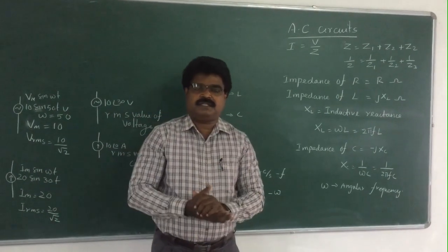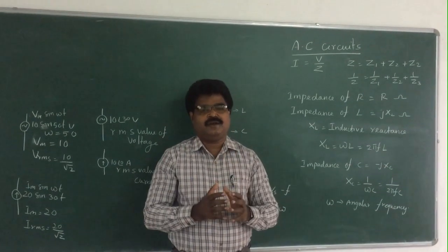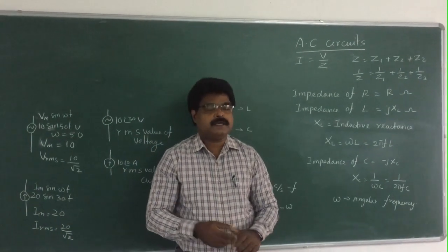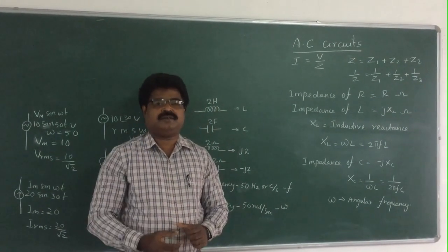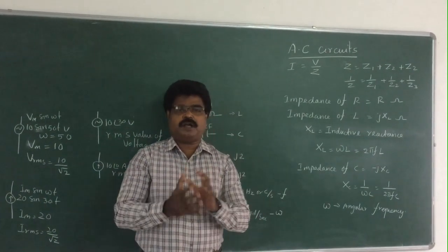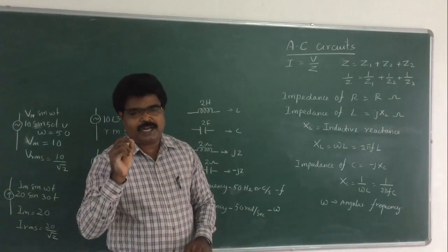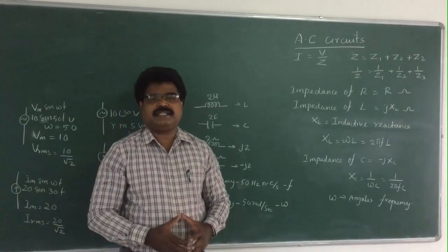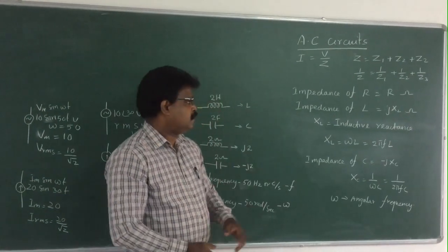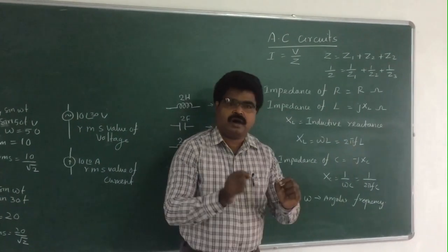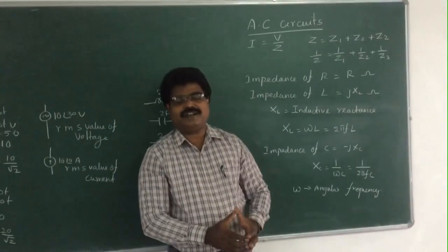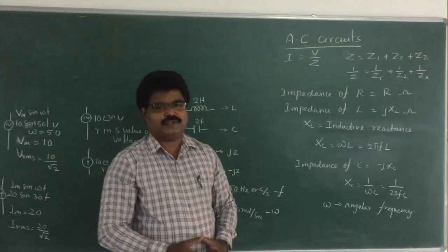You must first understand the impedance of each component: what is the impedance of resistance, what is the impedance of inductance, and what is the impedance of capacitance. The impedance of resistance is equal to R — there is no change. For DC it is R, for AC it is also R. The unit is ohm (Ω).